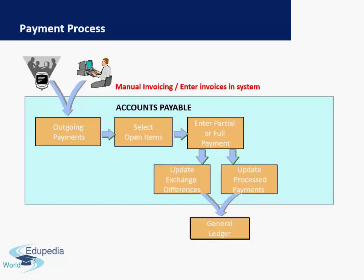Once manual invoicing is done in the system and the vendor invoice is already created, we start the outgoing payments process by selecting the open items. We can enter either a partial or full payment amount — this is specific to manual payments. If needed, you can also update exchange differences or update the exchange rate so the actual rate is picked up by the system. You then update and process the payments, and finally these payments are posted in the general ledger. We will discuss how this looks in a practical scenario in the next video. Thank you very much for watching Edupedia World videos.